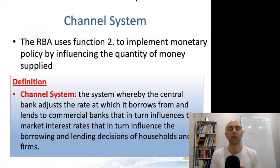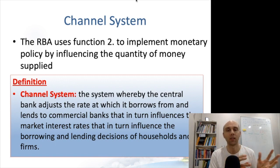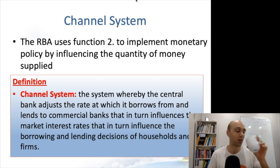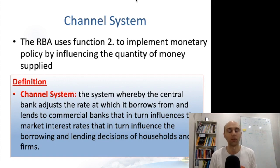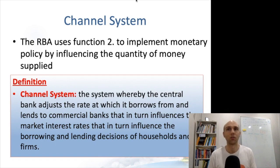The RBA uses its function as banker of banks to implement monetary policy. When we talk about the two sorts of macroeconomic interventions, monetary policy is the domain of the Reserve Bank of Australia, while fiscal policy is the domain of the government. The RBA implements monetary policy by influencing the money supply, particularly the quantity of money supplied. It does this through the channel system, whereby the central bank influences the rate at which it borrows and lends to commercial banks, which then flows down to the market interest rates — for term deposits, credit cards, mortgages, and so forth.